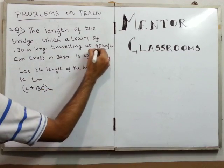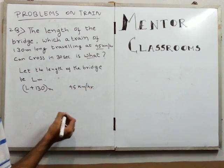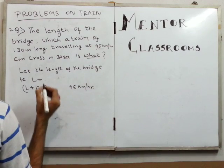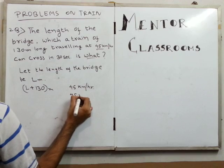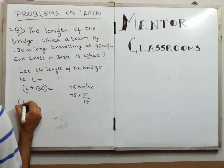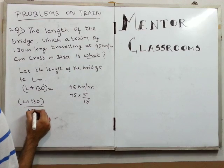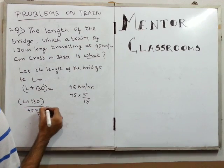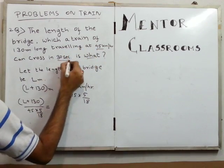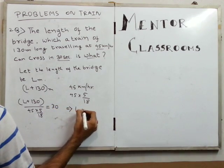The train crosses a distance of L plus 130 meters at a speed of 45 km/h. We convert 45 km/h to meters per second by multiplying by 5/18. Applying the equation distance equals speed times time, with time equal to 30 seconds, we calculate and get the length L.